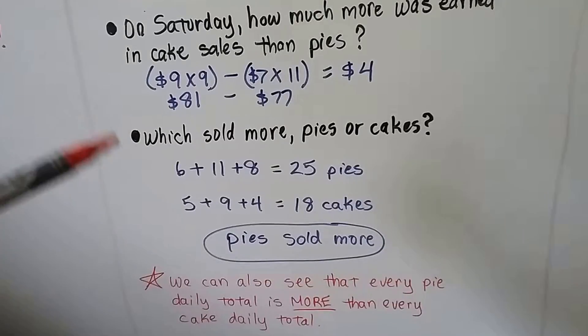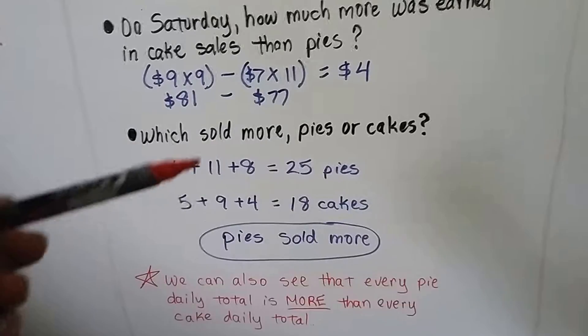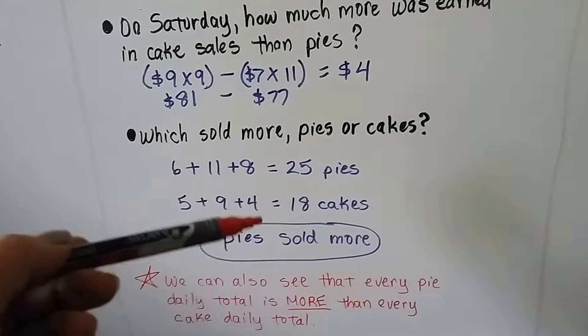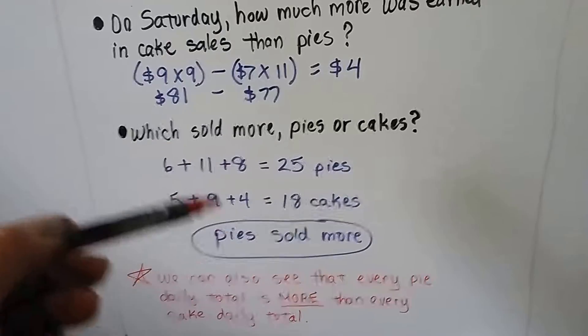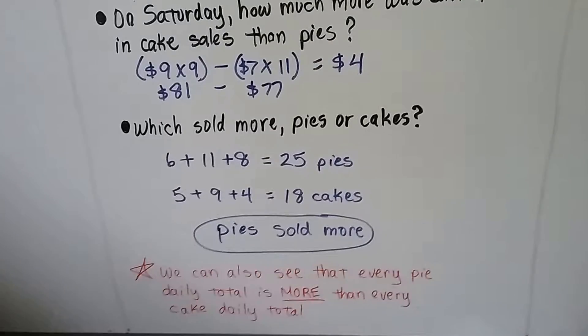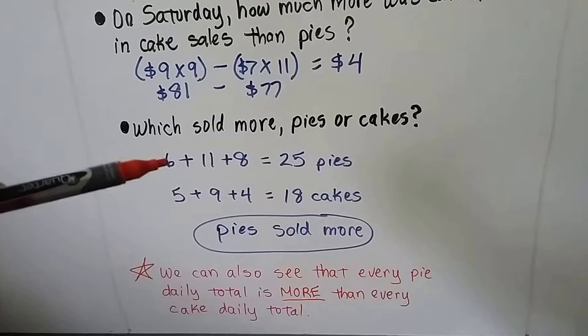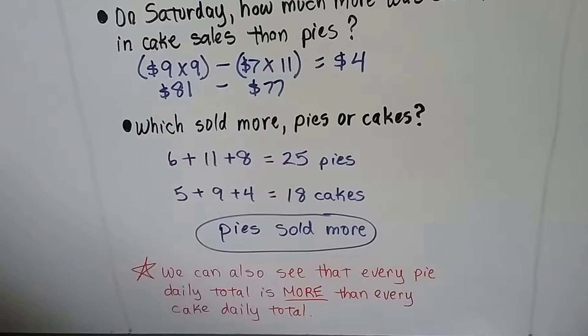If the question is just a yes or no, true or false, pie or cake, you can just look and compare those quickly. If it's a little confusing and the amounts go back and forth, then find the totals to compare them. In this one, it's kind of easy because we can see every single day, the pies had more sales. So, obviously, there were more pies sold.